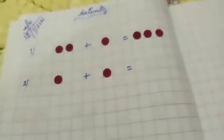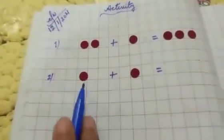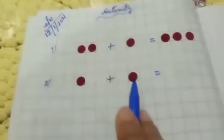Then equal sign. So how many bindis are there? One, two. So here you will put two bindis: one, two.